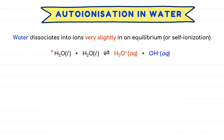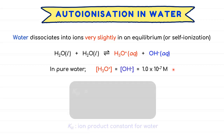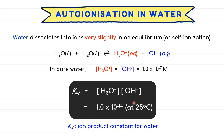Auto-ionization of water is a process where water dissociates into ions very slightly in an equilibrium, also known as self-ionization. The chemical reaction should have a reversible arrow. Two water molecules interact with each other to form hydroxonium ion and hydroxide ion — one with acid character, another with base character. The concentration of each species in pure water is 1×10⁻⁷ molar, making up the ion product constant Kw, where [H3O+][OH−] equals 1×10⁻¹⁴ at 25°C.